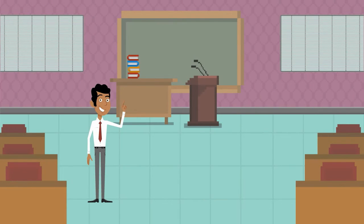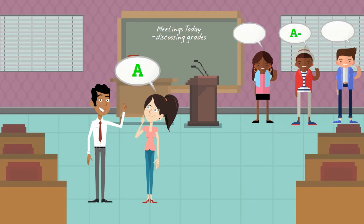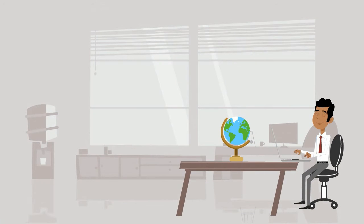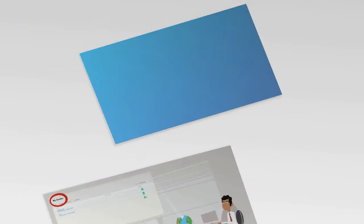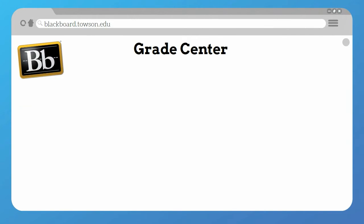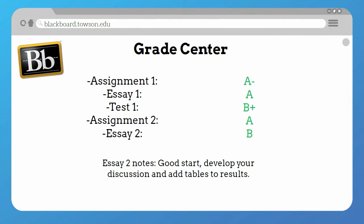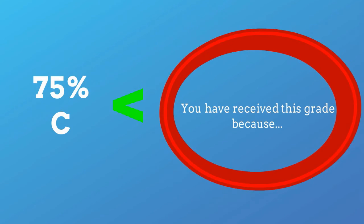Another common method that professors use to communicate with their students is through grading. A good grade should be a symbol of acquired knowledge, while a bad grade should represent room for improvement. Therefore, it's very important to maintain an accurate gradebook, which can be accomplished using Blackboard's Grade Center feature. This feature will allow you to upload grades in a timely fashion, and even leave notes explaining why the student received any particular grade. To most students, the descriptive feedback you provide in the notes is more valuable than a numeric grade, since a number can only convey so much.